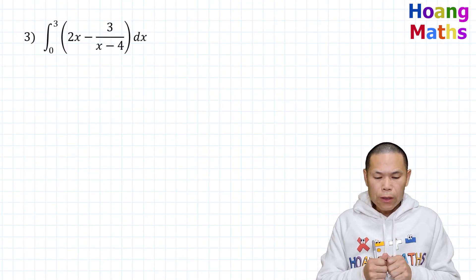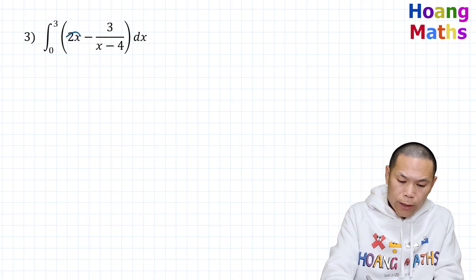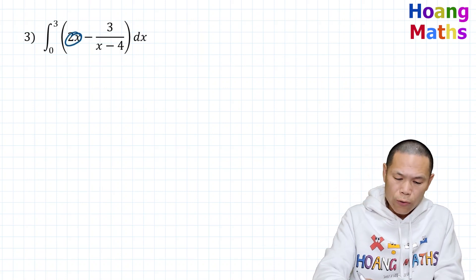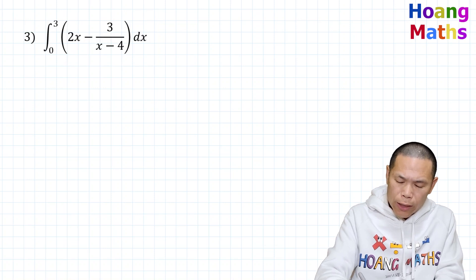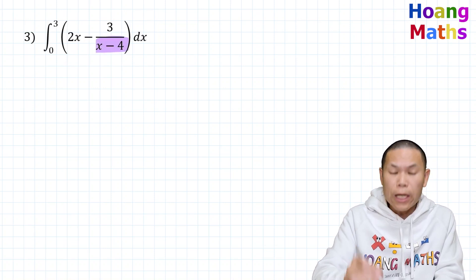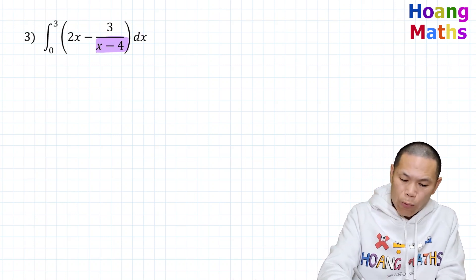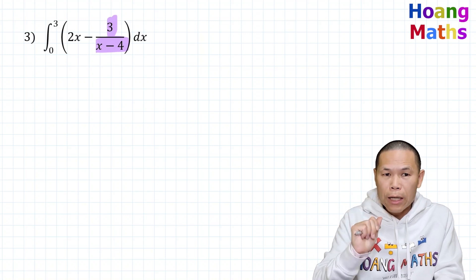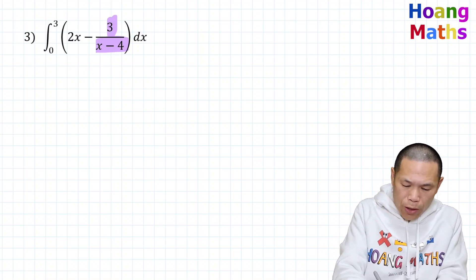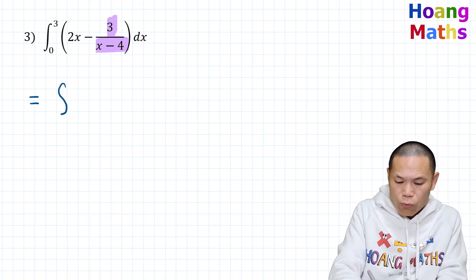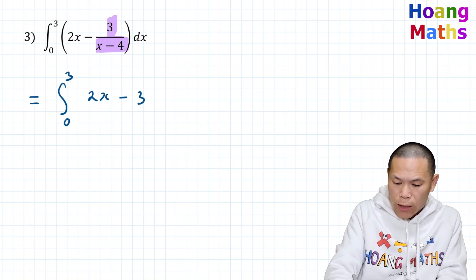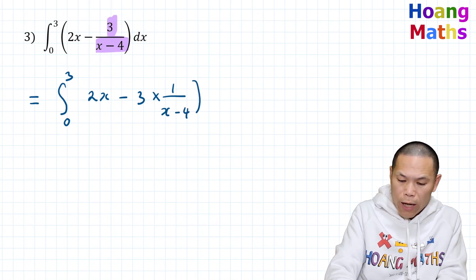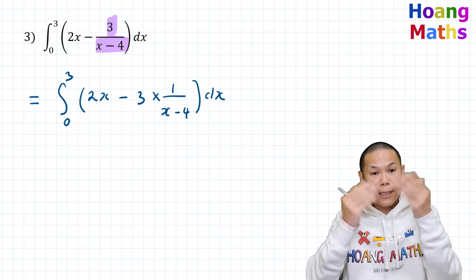Last one. To integrate 2x, that gives 2x squared over 2. For the second function, if we differentiate x minus 4, it gives 1. And we have 3 in the numerator, so I take the 3 outside, leaving 1 over x minus 4. So the integral can be rewritten as the integral of 2x minus 3 times 1 over x minus 4 dx.